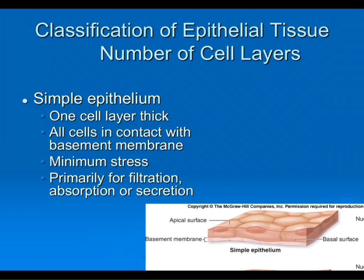I warned you I'd be going through some of this quickly because Mr. Mueller has already gone through histology carefully with you. We know epithelia are described in two ways: by the number of layers and by cell shape. Simple epithelia — one cell thick — are found wherever there is no need for protection. Across a simple epithelium you'd find filtration, absorption, or secretion, but not protection.